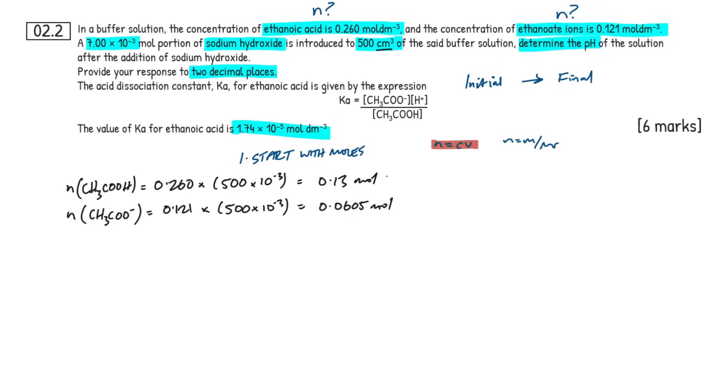So we're going to have CH3COO minus. So we're going to have our concentration, 0.121, multiplied by exactly the same volume, guys. It hasn't changed, 500 times 10 to the minus 3. So if you put that in your calculator, you're going to get 0.13 mole of the weak acid and 0.0605 mole of the salt. That's the first two marks done.